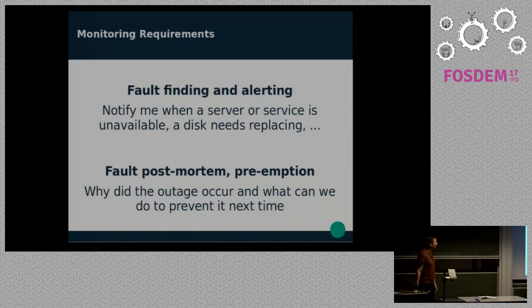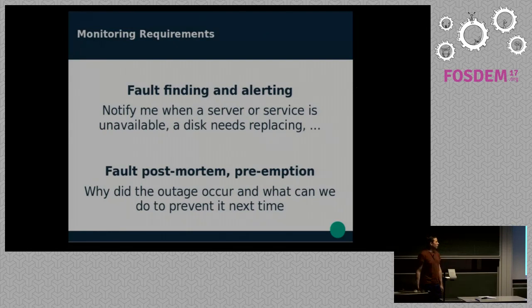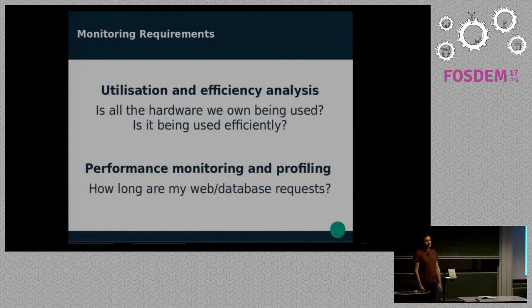Fault finding and alerting. So you need to be told when something breaks, when something goes down, when you need to replace a disk. Fault post-mortem and preemption. So once something's gone wrong, you want to prevent that from happening again. And ideally you want as much information as you possibly can about everything that was going on around the fault. So you can work out what caused it and make sure it doesn't happen next time.